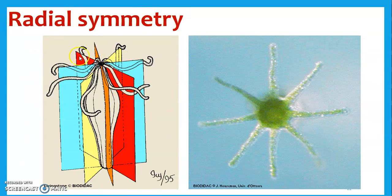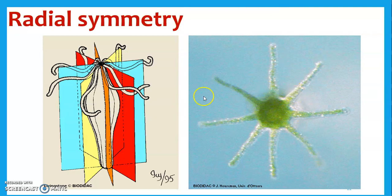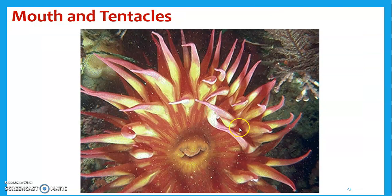This is what radial symmetry means — any way you cut them, they would all be a perfect side. Whereas we humans are only bilateral symmetry — you can really only cut us down between the eyes, and left and right should look the same, at least on the outside. So this is a new type of symmetry.